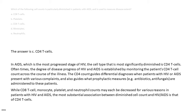While CD8 T cell, monocyte, platelet, and neutrophil counts may each be decreased for various reasons in patients with HIV and AIDS, the most substantial association between diminished cell count and HIV/AIDS is that of CD4 T cells.